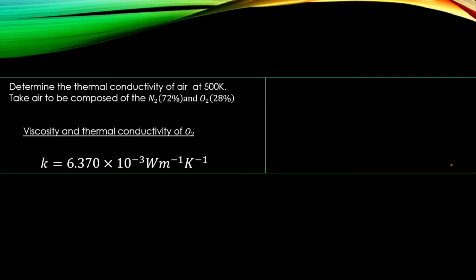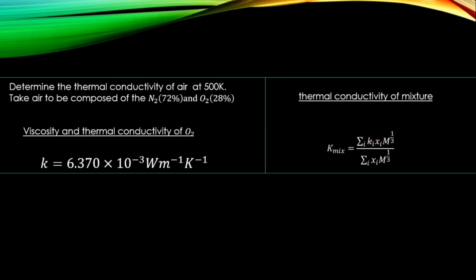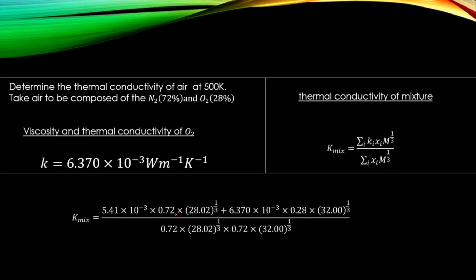Now we find the thermal conductivity of the air mixture at 500 K using the mixture formula. The formula sums over each gas: the thermal conductivity of each gas times its mole fraction times its molecular weight to the power of 1/3, all divided by the sum of each gas's mole fraction times molecular weight to the power of 1/3.